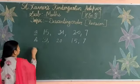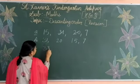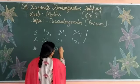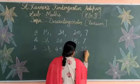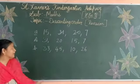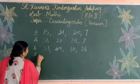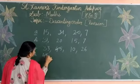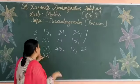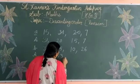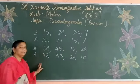Okay students, now the second one. Numbers: 33, 45, 10, 26. Among all these, which is the biggest one? Yes, 45 is the biggest number. So: 45, then 33. Between 10 and 26, which is bigger? Yes, 33, then 26, then last number 10.